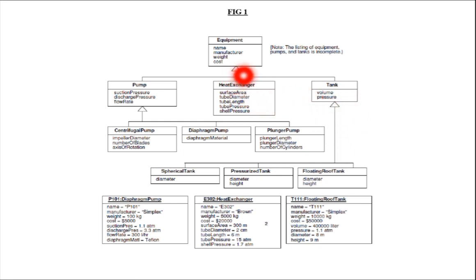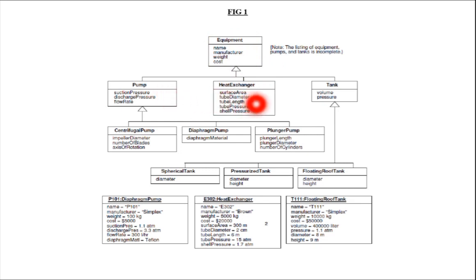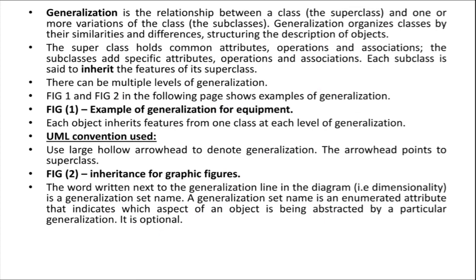The arrowhead always points to the superclass. In this example, equipment is the superclass, and pump, heat exchanger, and tank are the subclasses. That is the notation — we use a large hollow arrowhead to denote generalization, and the arrowhead always points to the superclass.